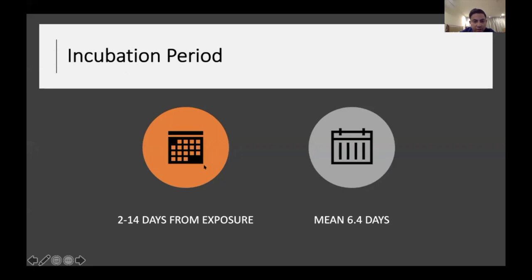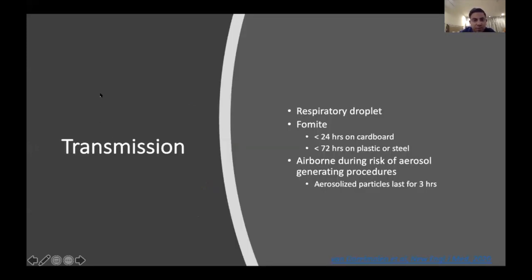The incubation period of SARS-CoV-2 is about 2 to 14 days, with some reports up to 21 days, but the CDC and WHO agreed-upon period is 14 days with a mean of 6.4 days before symptoms appear. Transmission of COVID-19 is mainly via respiratory droplets and fomites, and airborne transmission can occur during aerosol-generating procedures such as intubation, chest compressions, high-flow nasal cannula, or BiPAP.